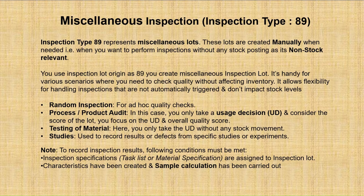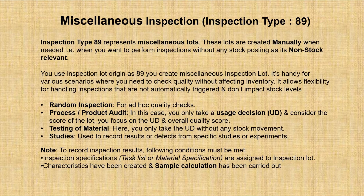It's a miscellaneous or manual inspection lot, just to check the quality of the material. We can use it for audits — like product audits — or if you just want to do testing of the material. Random inspection we want to do; it is a non-stock relevant inspection type. We are just inspecting the material, so stock is not moving to the quality department.